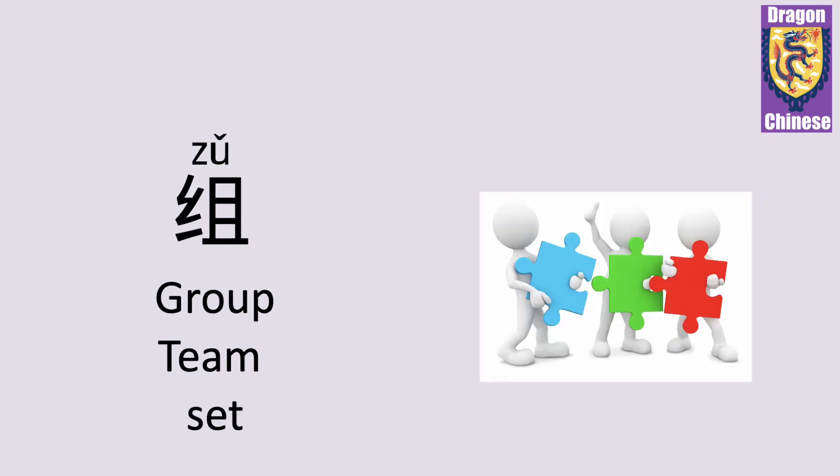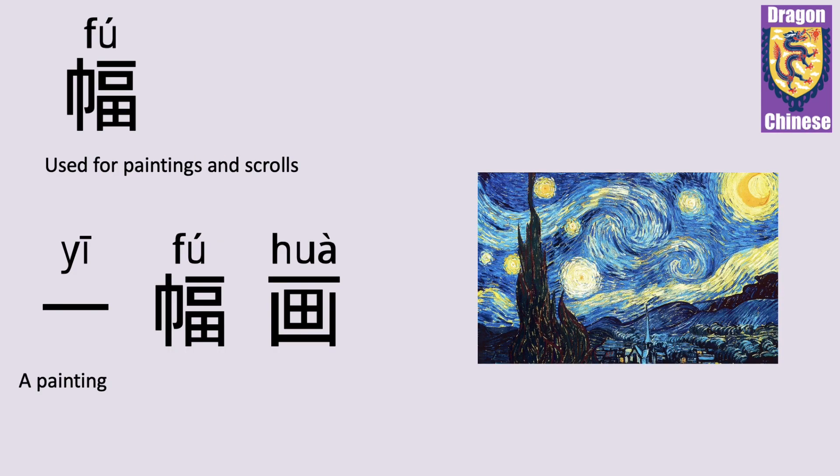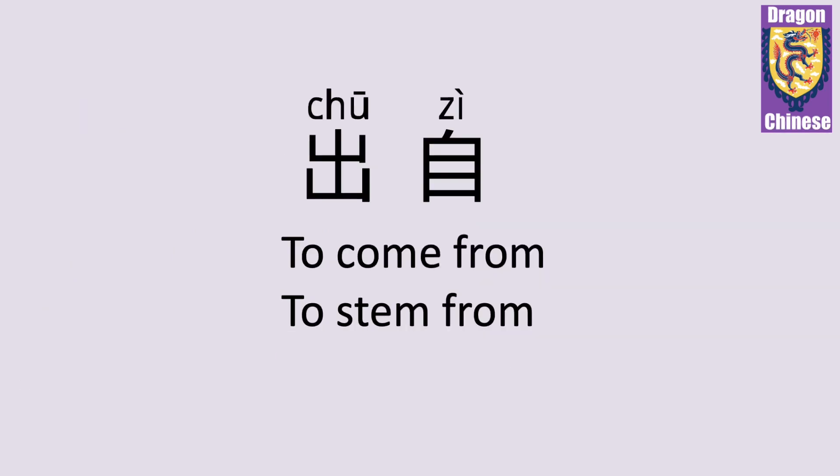组 — group, team, set. 组. For example, useful paintings and scrolls. 衣服化 — 衣服化. 出字 — to come from, to stand from. 出字.